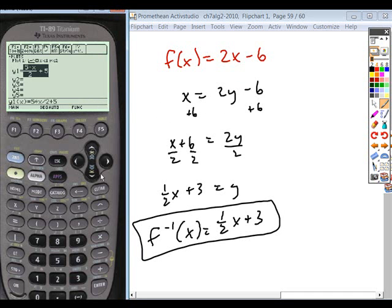We go to our y editor here. I'm just going to type in these two equations. So 2x minus 6, and we found the inverse function to be 1 half x plus 3.